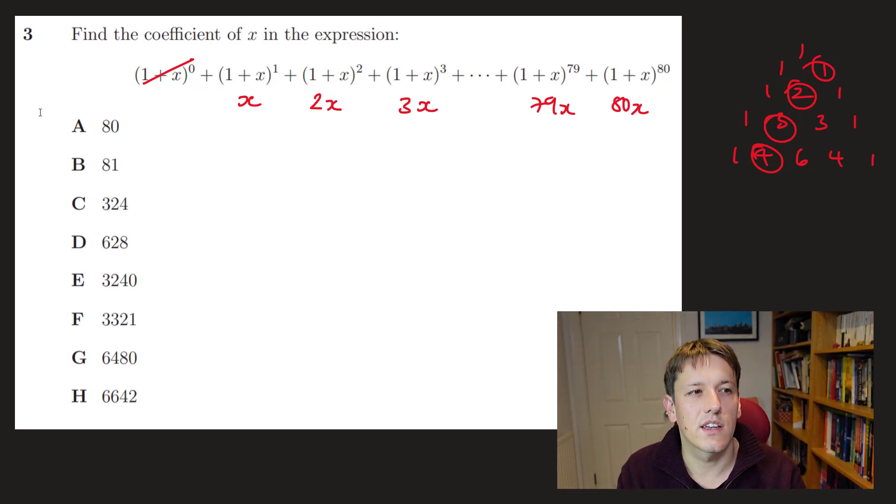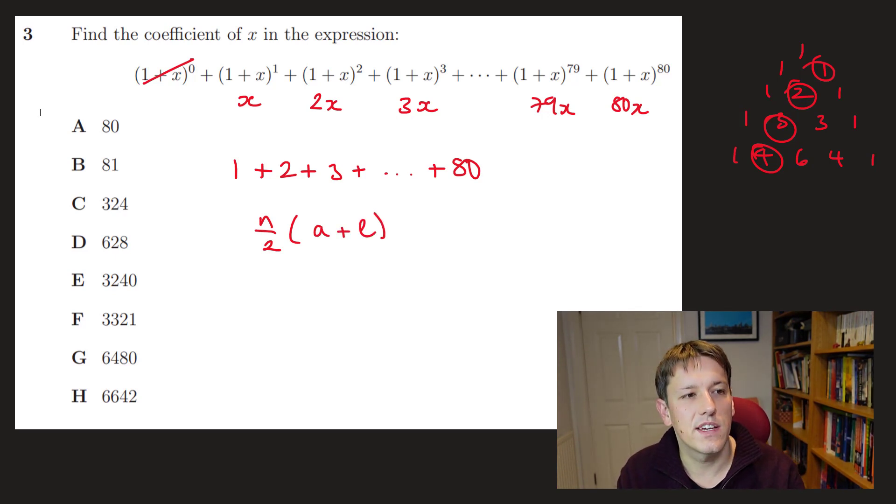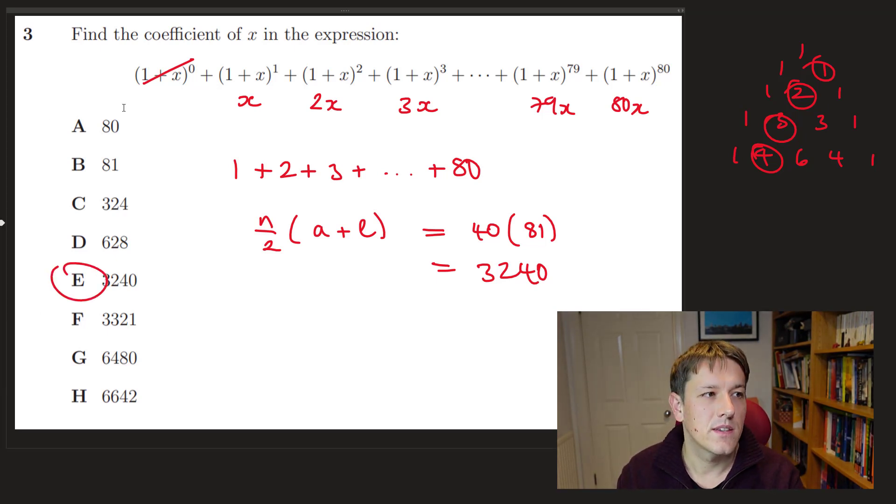The next one will be 4x, and we'll get up to 79x and 80x. So what's this question really asking? It's asking us to sum the arithmetic progression 1 + 2 + 3 all the way up to 80. So we can do n/2 times first term plus the last term. So we've got 80 terms, so that's 40 times 80 + 1. So 40 times 81 is going to give us 80 times 40 is 3,200 plus 40 is 3,240. And so the answer is E.